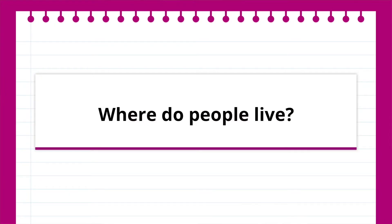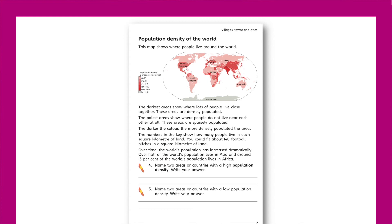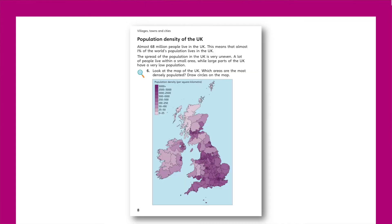The first lesson asks, where do pupils live? Pupils will consider the population of the whole world, and how the distribution of this population is unevenly spread across the world. They'll also study the population density map of the UK, giving them a clear idea of where people live in our country.